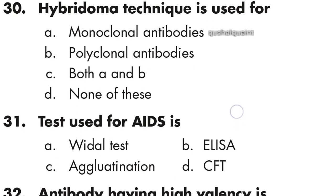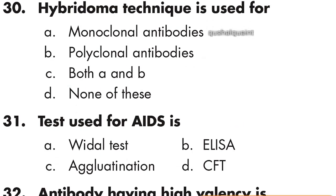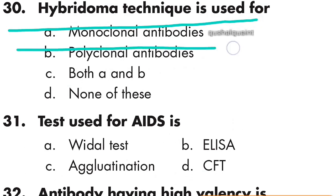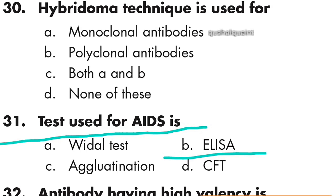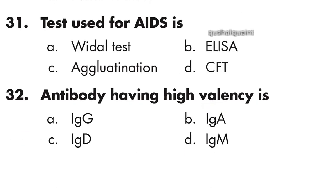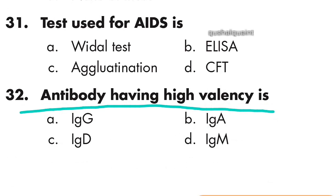Question 30: Hybridoma technique is used for monoclonal antibodies, option A is right. Question 31: Test used for AIDS is ELISA, option B is right. Question 32: Antibodies having high valence is IgM, option D is right.